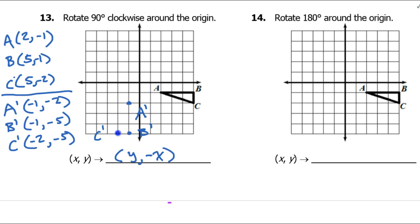So my image is going to look like this. For a 90-degree clockwise rotation, you should imagine taking this pre-image and rotating it like this, and it lands over there.